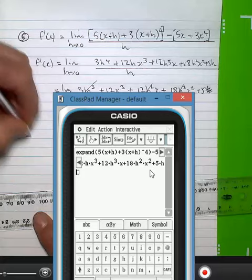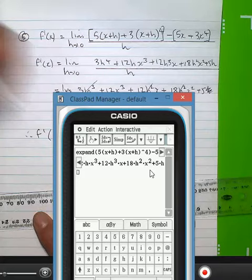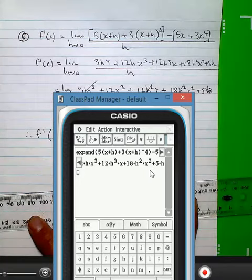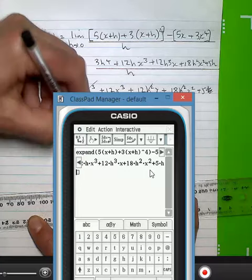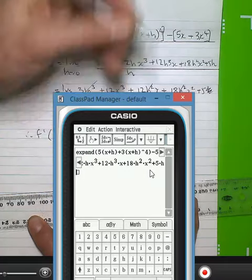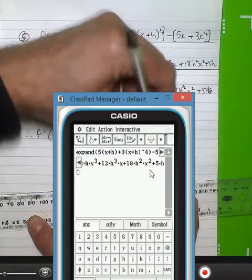So to take the derivative of 5x plus 3x to the power of 4: 12x cubed plus 5.